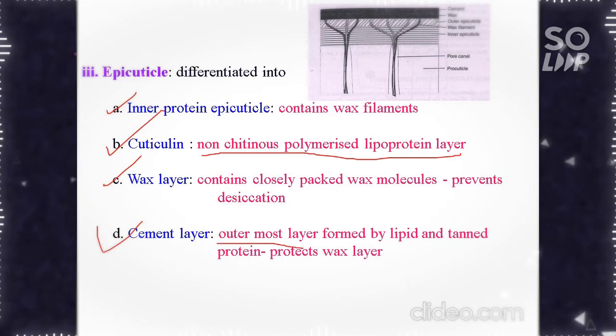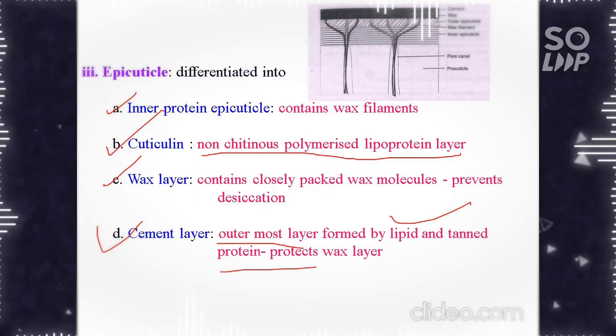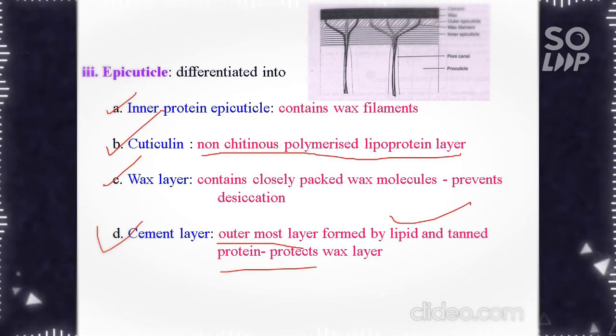The cement layer is the outermost layer formed by lipid and tanned proteins. It protects the wax layer, is much harder than the wax layer and prevents the wax layer from abrasion.